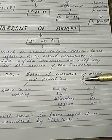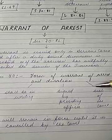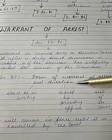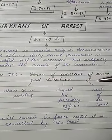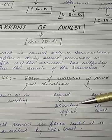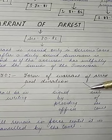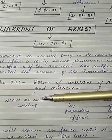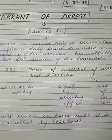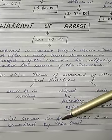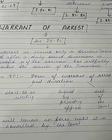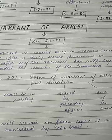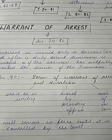Section 70 talks about the form of warrant of arrest and its duration. The warrant of arrest should be in writing — that is the first point. It should be signed by the presiding officer of the court, and it shall bear the seal of the court. These three points you have to remember for section 70: in writing, signed by the presiding officer, and bearing the seal of the court. It will remain in force until it is cancelled by the court or executed. The format of the warrant of arrest is given in Form Number 2 of the CrPC.